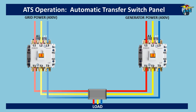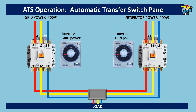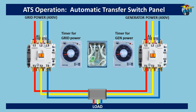We need two 8-pin timers — one for grid power and the other for generator power. We also require one 8-pin DPDT relay. DPDT stands for double pole double throw. In DPDT relays and timers, two separate inlet ports are available.